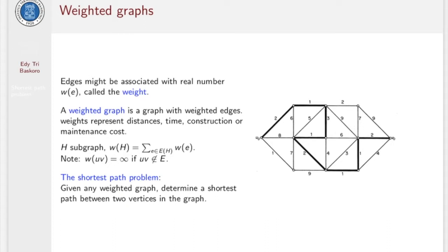Let's start with the definition. Edges might be associated with a real number, and in this case we call it the weight of the edges. We denote by w(e) for the edge e. A weighted graph is a graph with weighted edges. The weight here can represent distances, time, construction, and/or maintenance costs.